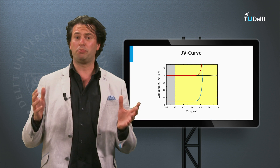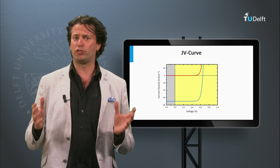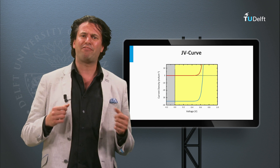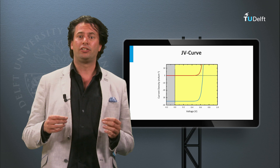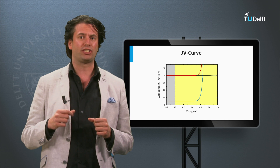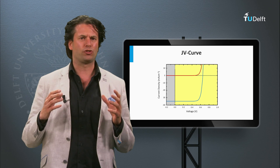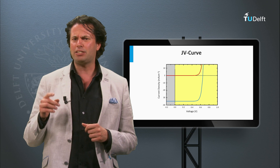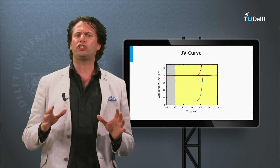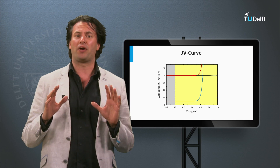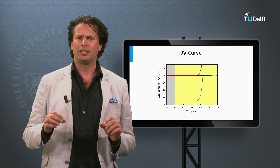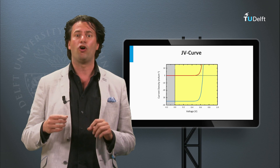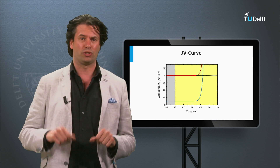How can we determine the performance of a solar cell? In the previous block we have introduced the JV curve of an ideal solar cell and its corresponding electrical circuit. In this block we are going to discuss the external parameters that determine the light to electricity conversion efficiency of an ideal solar cell.